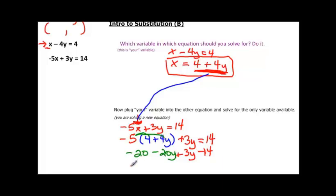And now we're ready to combine like terms. Negative 20 is its own term. Combine those like terms right here. And we have negative 20y plus 3y would be minus 17y is equal to 14.